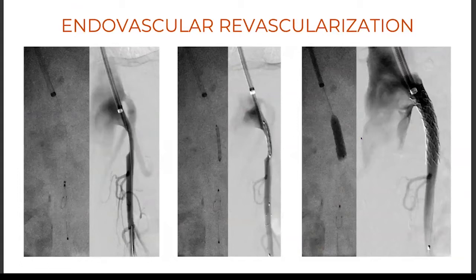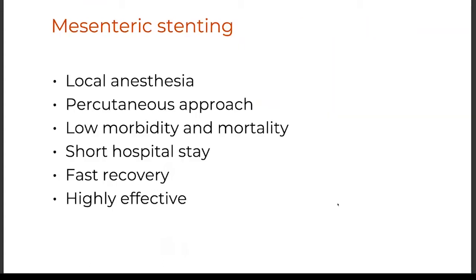Endovascular therapy has taken off really since the early 2000s. I previously recommended the brachial approach, but nowadays with steerable sheaths you really don't need to do that. Key considerations include the use of embolic protection filters and covered stents. The advantages that are tough to beat: done under local anesthesia with a small puncture, unquestionably low morbidity and mortality, very short hospital stay of one night, fast recovery, and it is highly effective. And if done carefully, you don't burn any bridges for a subsequent bypass.